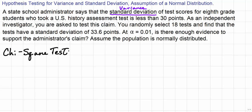In order to do that, I need to first determine if this is a two-tailed test or a one-tailed test. And if it's a one-tailed test, I need to determine if it's a left-tailed or right-tailed test. We start by looking at what the claim is. The claim is that the standard deviation is less than 30 points, so that is sigma is less than 30.